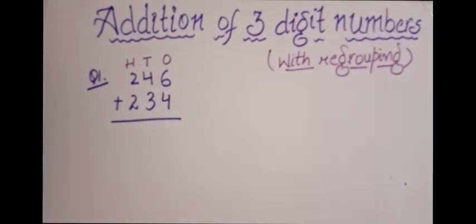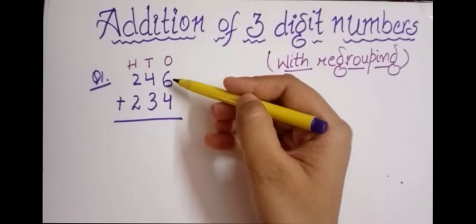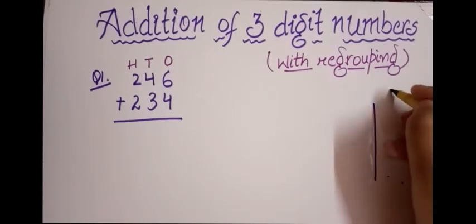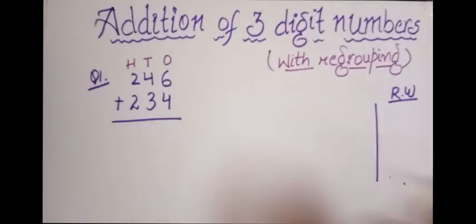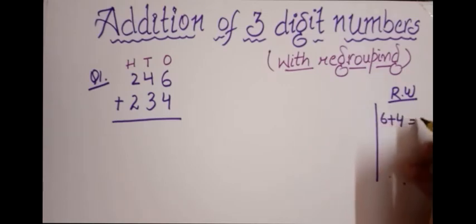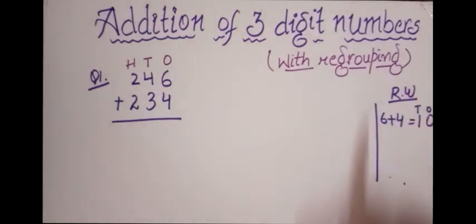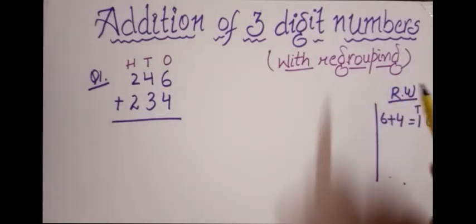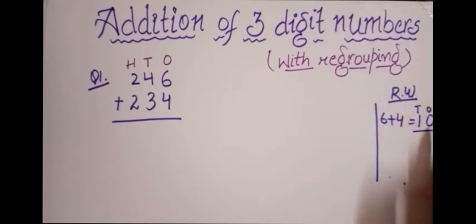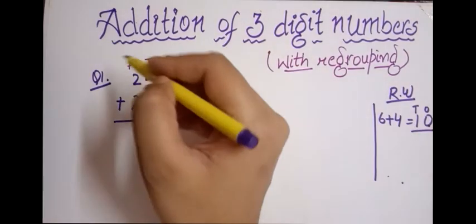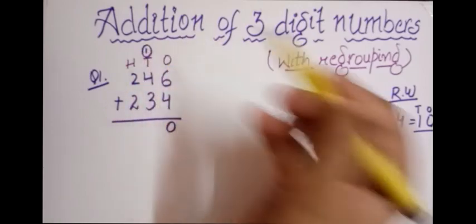I'll draw a line and begin adding from the ones column, as we always start from ones. Six plus four — I'll do the rough work on the side — six plus four equals ten. Zero is in the ones place, so I write zero in the ones column. One is in the tens place, so we carry it over. I'll write one here and circle it so I don't forget to add it.